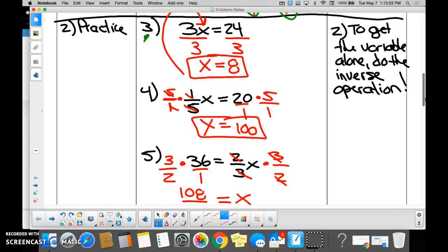How am I going to get x alone? What is it being done to x right now? It's being multiplied, so how do I undo multiplication? Divide. And if I divide to get the x alone on one side, I must divide the other side. And then you just clean it up and get x equals 8.